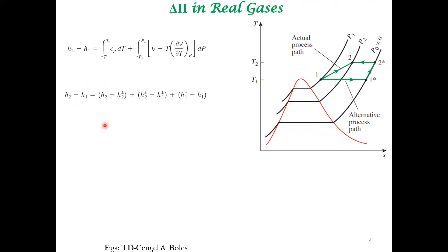That's the approach we are going to utilize. We are interested in computing enthalpy changes from state one to state two for real gases. Instead of going directly, we use an isothermal process to decrease the pressure. At zero pressure, a real gas will always behave like an ideal gas. So you start at T1, undergo an isothermal change to reach an ideal gas state, increase the temperature, and then undertake another isothermal process of increasing the pressure to reach state two. We implement this in three stages because enthalpy is a state property.